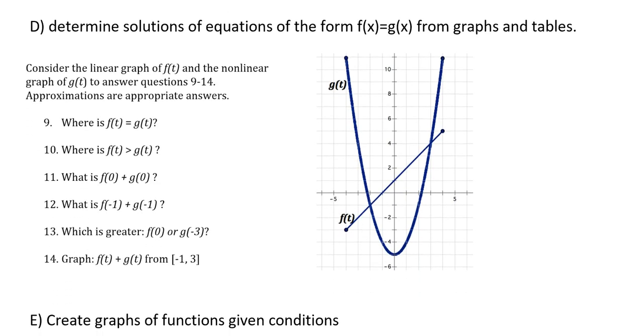Going down to part D: determine solutions of equations of the form f of x equals g of x from graphs and tables. So we have f of t and g of t. In problem 9 we are asked where is f of t equal to g of t? So we're looking for the places where the graphs intersect, and so that would be at two t values: t equals negative 2 and t equals positive 3. So there's negative 2 there and 3 there for the t values of those intersection points.